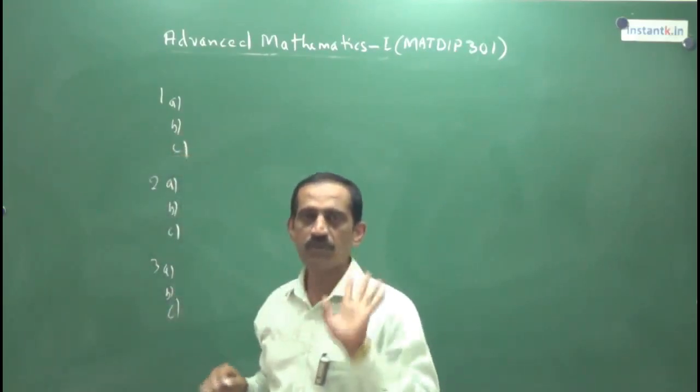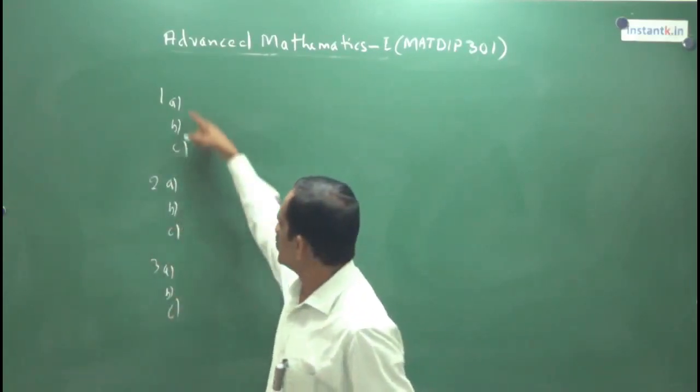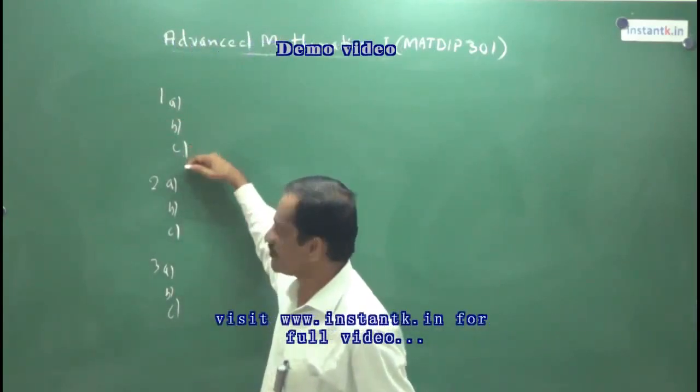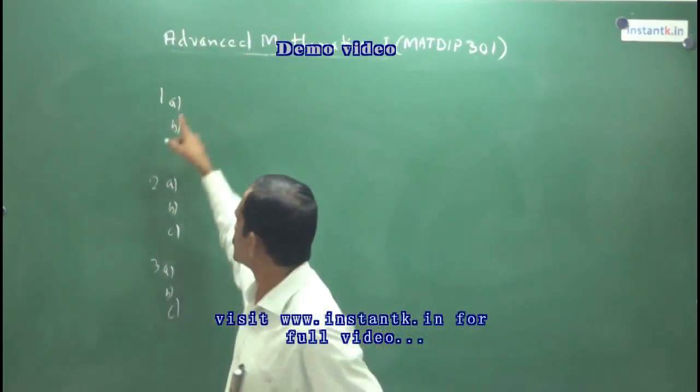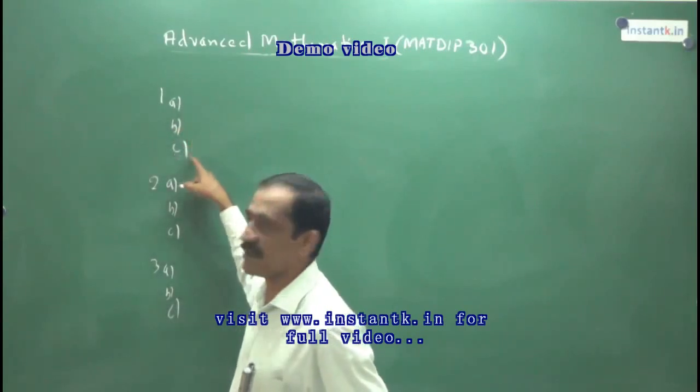Sometimes instead of 3 questions, 4 questions will be asked, and that entire question carries 20 marks. The first may be this 6, this 7, this 7, like that.